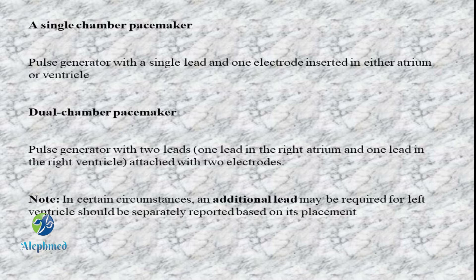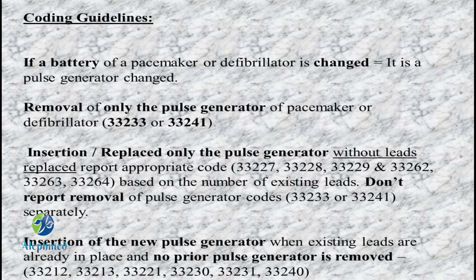We have two types based on mode of insertion: a single chamber and a dual chamber. We have to follow the CPT codes for any type of pacemaker. A battery or defibrillator change is called a pulse generator change. This involves the removal of the pulse generator, and the code is 33233 or 33241.